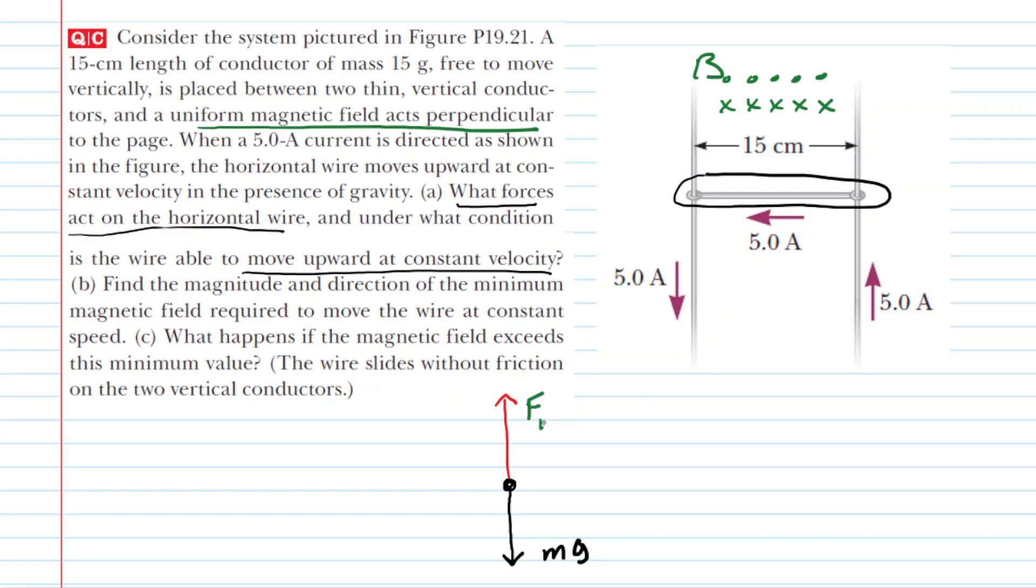We can label that F sub B. Now in order for the conductor to move at constant velocity, then as noted the magnetic force must have an equivalent magnitude to the gravitational force. So to summarize, the two forces acting on the conductor are the magnetic force and the gravitational force, but in order to move at constant velocity the magnetic force must equal the gravitational force.